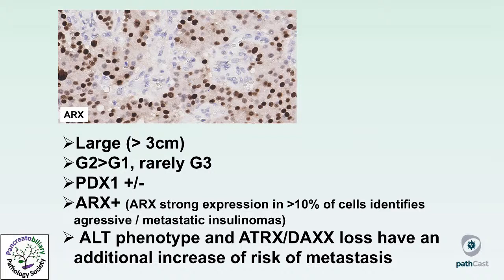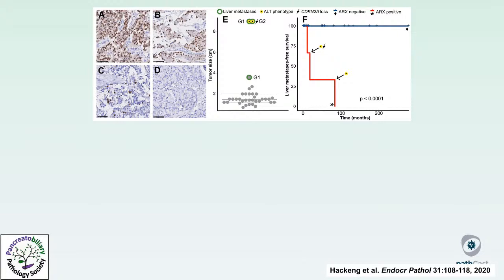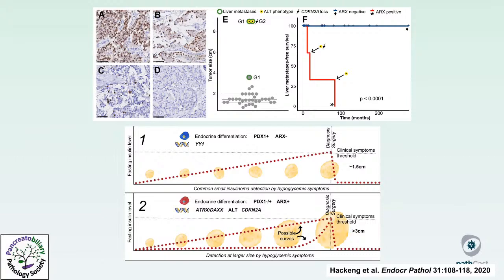Specific clinical-pathological features of aggressive insulinomas include: tumors larger than 2 cm, often more than 3 cm; most are G2, with rare G1 and occasional G3 cases. These aggressive insulinomas can be positive for PDX1 but in a lower percentage than indolent insulinomas, and a characteristic immunohistochemical profile is the expression of ARX — strong ARX expression is associated with very aggressive behavior. An additional loss of DAXX/ATRX with an ARX phenotype confers an additional increase in risk of metastasis. The data suggest two different molecular pathways: YY1 for indolent insulinomas, and ATRX/DAXX/ALT phenotype/ARX mutation for more aggressive insulinomas.